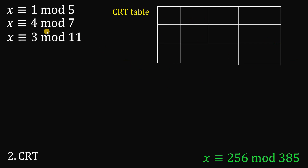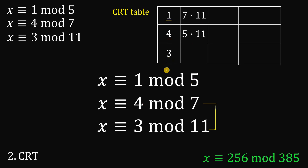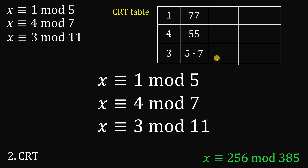Let's use the congruences to fill in the table. In the first column, we place the remainders: 1, 4, and 3. In the second column, under the 1 we find the product of the other two moduli — 7 and 11. Under the 4, we find the product of 5 and 11. Under the 3, we find the product of 5 and 7. So the pairwise products are: 7 times 11 equals 77, 5 times 11 equals 55, and 5 times 7 equals 35.